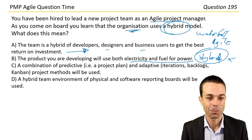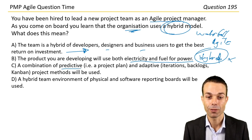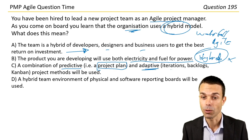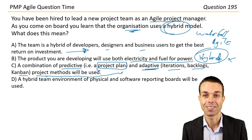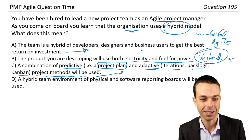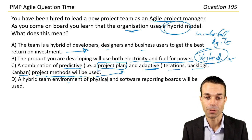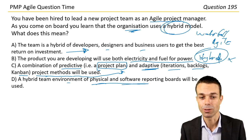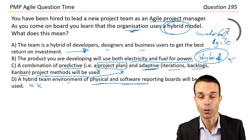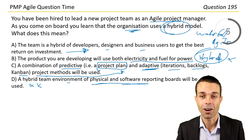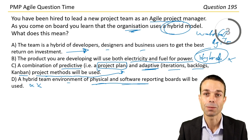A combination of predictive — for example, a project plan planned in advance — and adaptive — for example, iterations, backlogs, Kanban — project methods will be used. Yes, that's exactly what we're after. A hybrid team environment of physical and software reporting boards — that could be a trap, but it's not the right answer. It's not a physical or software environment; it's a hybrid combination of project management methods.